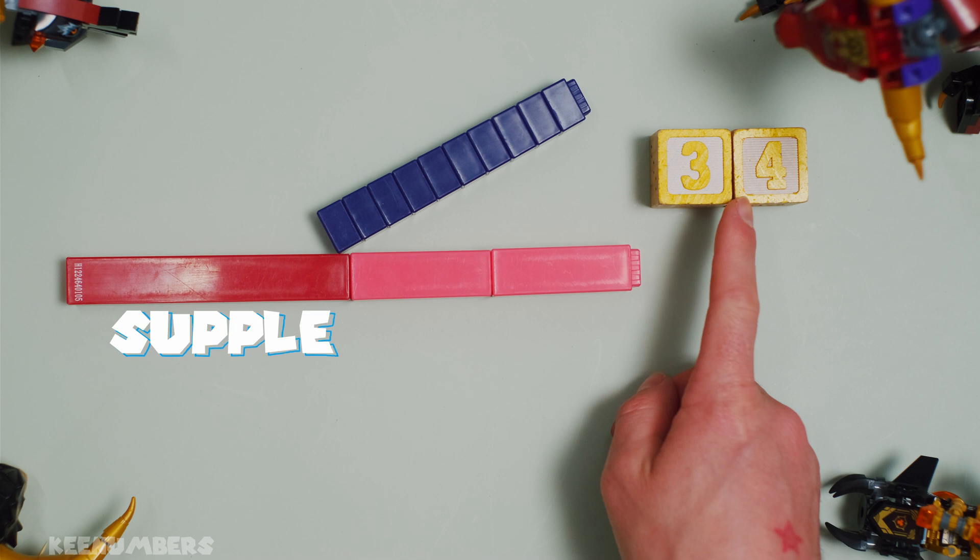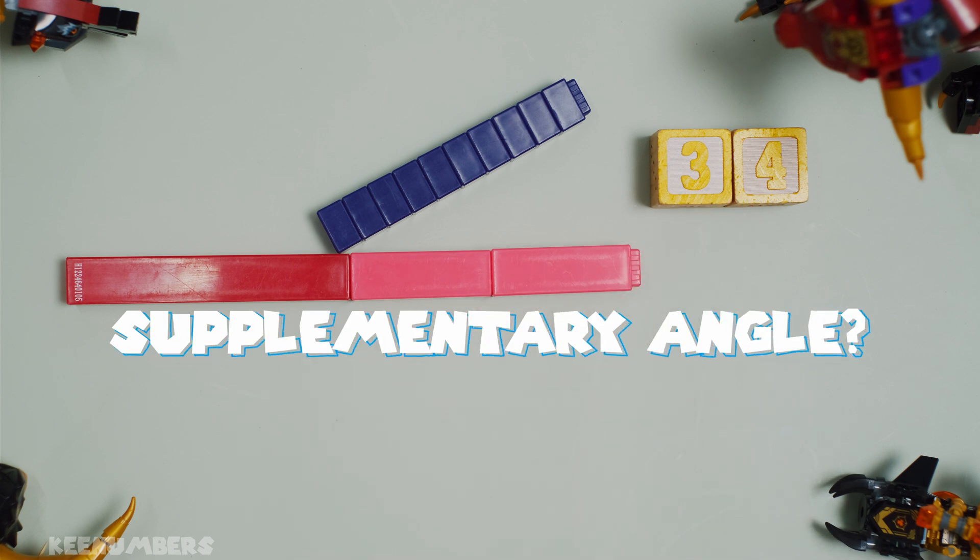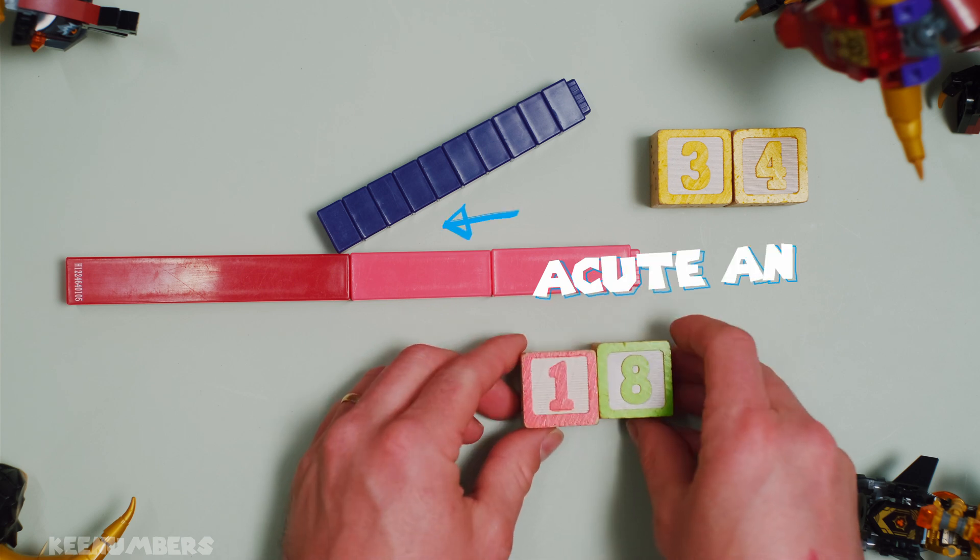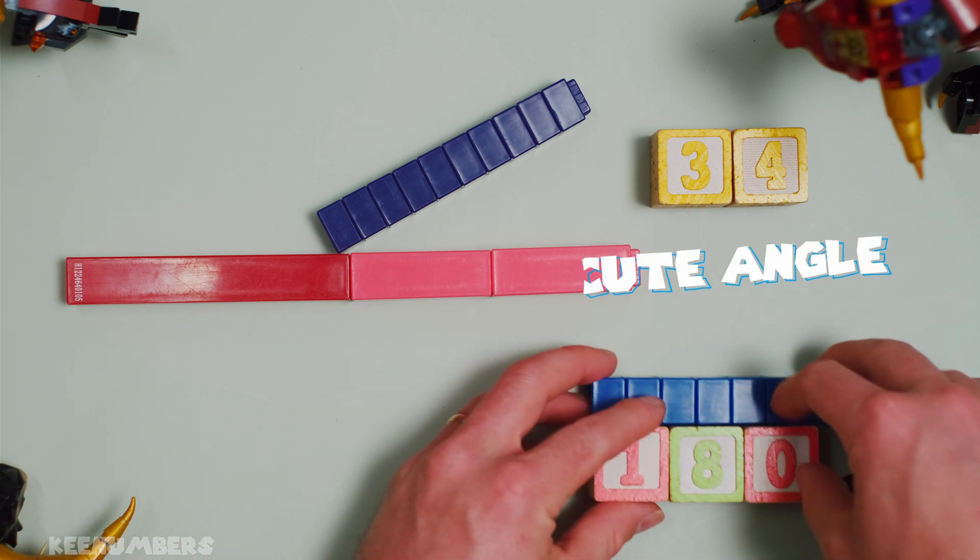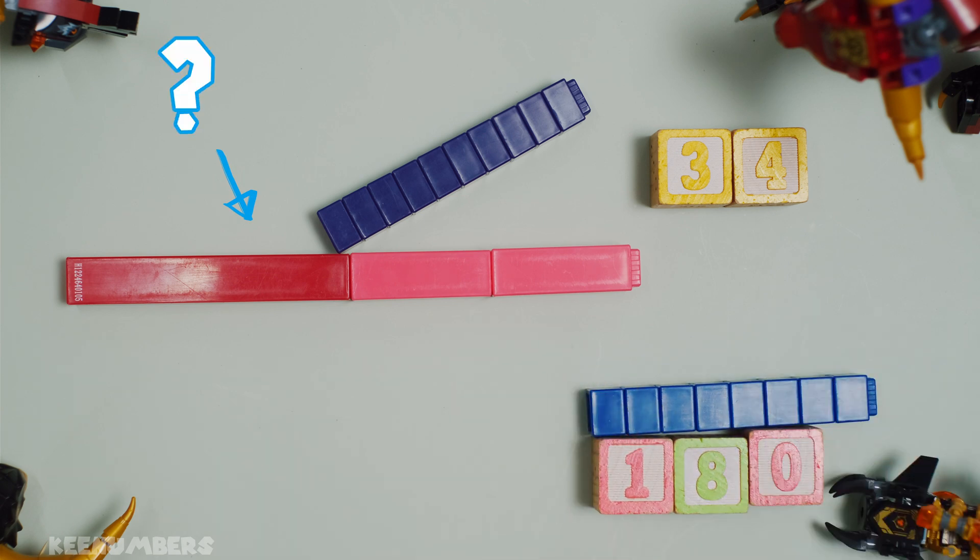Let's find the supplementary angle of 34 degrees. In other words, we're looking for whatever number is going to give us 180 degrees when we add it to 34. That's our mission.